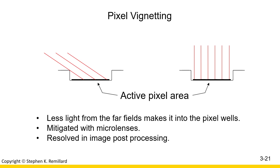Finally, there is a vignetting that occurs as a result of how pixels are arranged. The active area of a pixel is usually sunk into a well, and that creates a shadowing when the light arrives at an angle. Much like natural vignetting, where you lose image brightness because of the angle of approach that the light makes with the sensor, the larger the angle of approach that the light is making to the sensor, the more light that's not going to get onto the sensor. This is less of a problem when there are microlenses on the pixels. This is also something that can be resolved in post-processing because it's a known effect of each pixel and the pixel's location on the focal plane array.